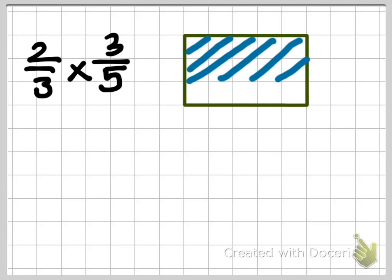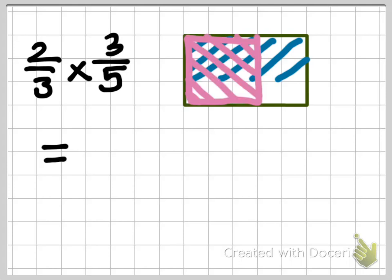The next step is to show the fraction 3 fifths, but lay it over the first fraction of 2 thirds. To determine the answer, you only have to look at how many squares are overlapped with both the pink and the blue.